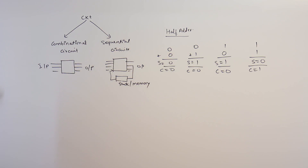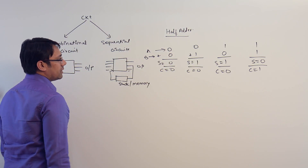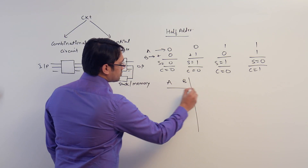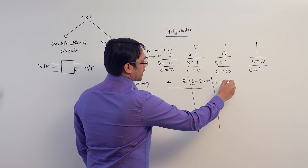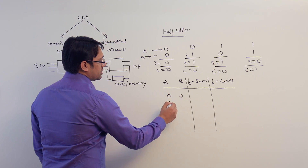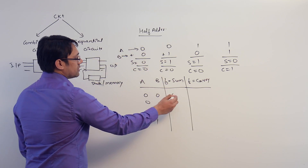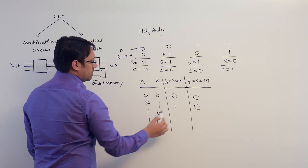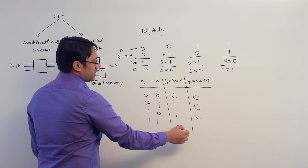We need to add two bits, where the first bit is represented by A and the second bit by B. We can make a circuit with inputs A and B, one function representing sum and another representing carry. The combinations of A and B are: 0,0 → sum 0, carry 0; 0,1 → sum 1, carry 0; 1,0 → sum 1, carry 0; 1,1 → sum 0, carry 1.